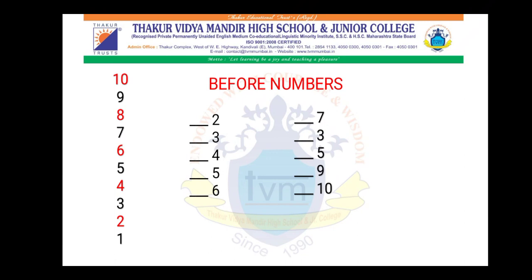Let's fill in the blank with a before number. What comes before 2? 1. Before 3, 2. Before 4, 3. Before 5, 4. Before 6, 5. Before 7, 6. Before 3, 2. Before 5, 4. Before 9, 8. Before 10, 9. So we learnt before numbers.